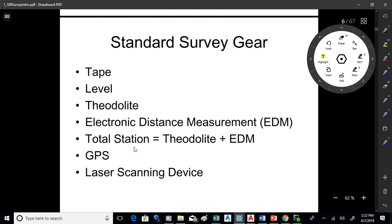If you're with a medium-sized survey company, certainly you'll be using a tape and a level and a theodolite to turn an angle. You use an electronic distance measurement device called an EDM to measure distance. And a total station then is a combination of a theodolite and an EDM.